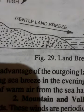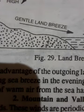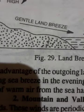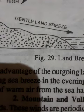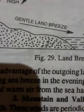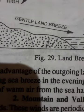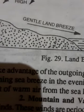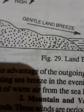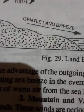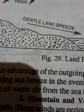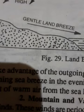Monsoon winds are periodic winds like the sea and land breezes but on a large scale. The monsoon is a seasonal wind which blows in a fixed direction during a particular season. It reverses its direction as the season changes. The word monsoon is derived from the Arabic word meaning 'season'. These winds develop due to differential heating of land and sea temperature, and hence can be considered as land and sea breezes on a large scale. These winds can be best noticed in South West Asia and Northern Australia.